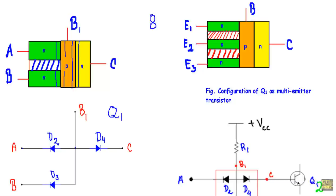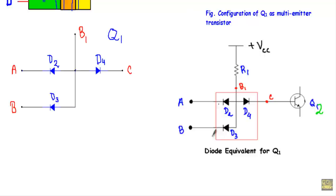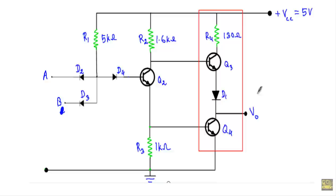If in the original circuit I replace transistor Q1 with its diode equivalent circuit, I get a circuit where between base B1 and terminal A is diode D2, between B1 and input B is diode D3, and between B1 and collector C is diode D4. The base terminal of Q1 connects to resistor R1 and the collector connects to the base of transistor Q2. This portion inside the red rectangle is the diode equivalent circuit of transistor Q1. This is the TTL totem pole NAND gate with Q1 replaced by its diode equivalent.